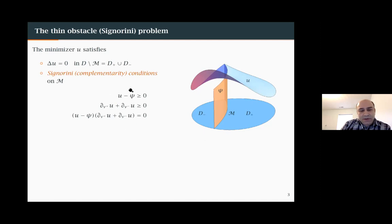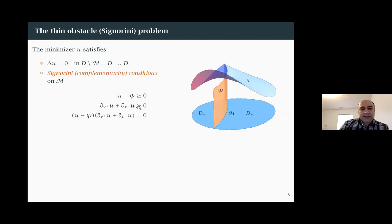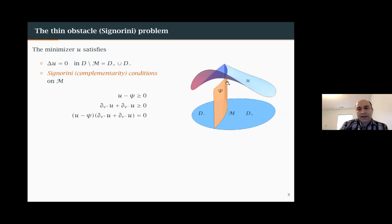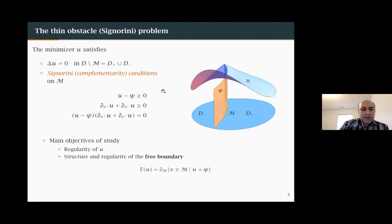There is a way to characterize the conditions for the minimizer on the thin space. The minimizing property is equivalent to these Signorini complementarity conditions: U minus C is non-negative (U is above C); the sum of the outer normal derivatives from D plus and D minus is greater or equal to zero; and the complementarity condition that (U - C) times the sum of normal derivatives equals zero. Where U is strictly above C, the sum of the two derivatives is zero, meaning the solution is smooth there.